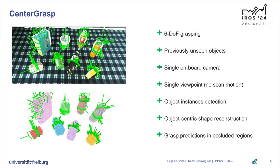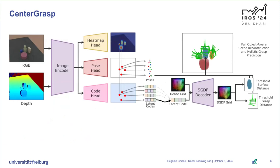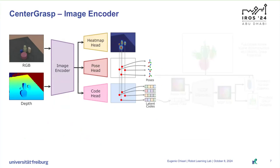Let's now directly jump into our proposed architecture to see how CenterGrasp works. Here we can see the full architecture of our method. The two main components are the image encoder on the left and the Shape and Grasp Distance Function decoder on the right, SGDF. Let's zoom in into each component. First, we have the image encoder, which is inspired by prior work CenterSnap.